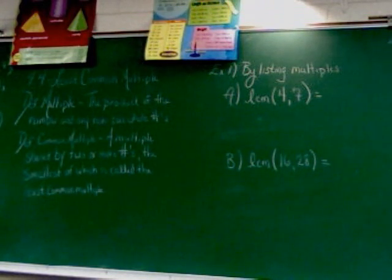Just like greatest common factor, there's two ways we can find the least common multiple. The first is the one you're probably most familiar with, listing multiples, which is what we're trying to do in example 1.